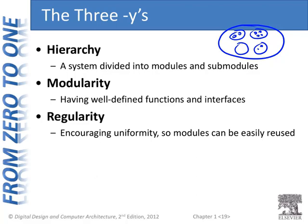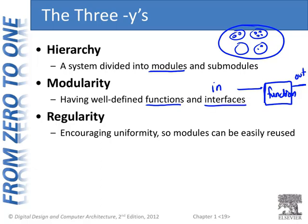Modularity — I've used that word module, so let's define it. Modularity is how we define these modules. Modules have defined functions — this module does something, and that's its function — and well-defined interfaces, for example inputs and outputs. So modularity is defined by having these two features: well-defined functions and well-defined interfaces. For example, the function of a steering wheel is to move the wheels of your car, and the interface is the round — or whatever-shaped — steering wheel itself.